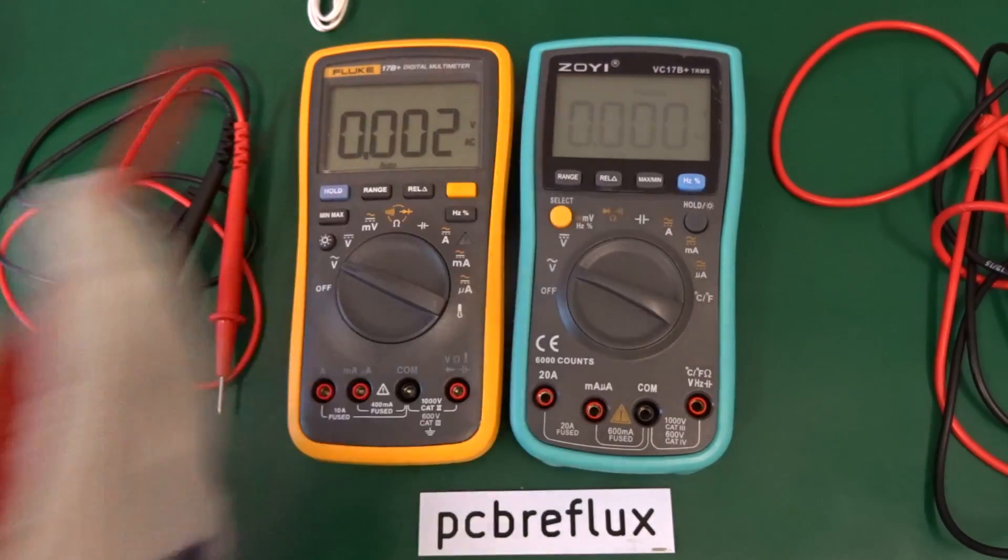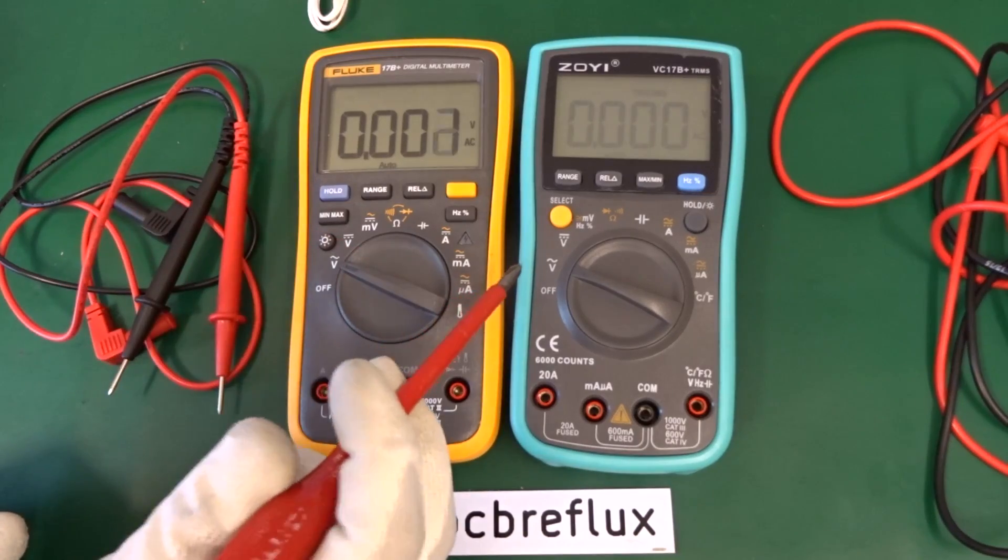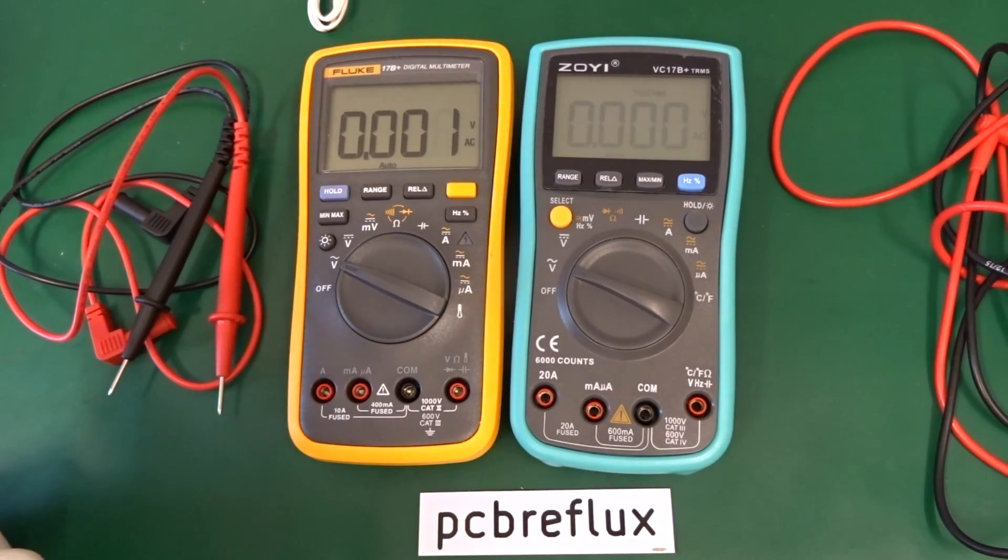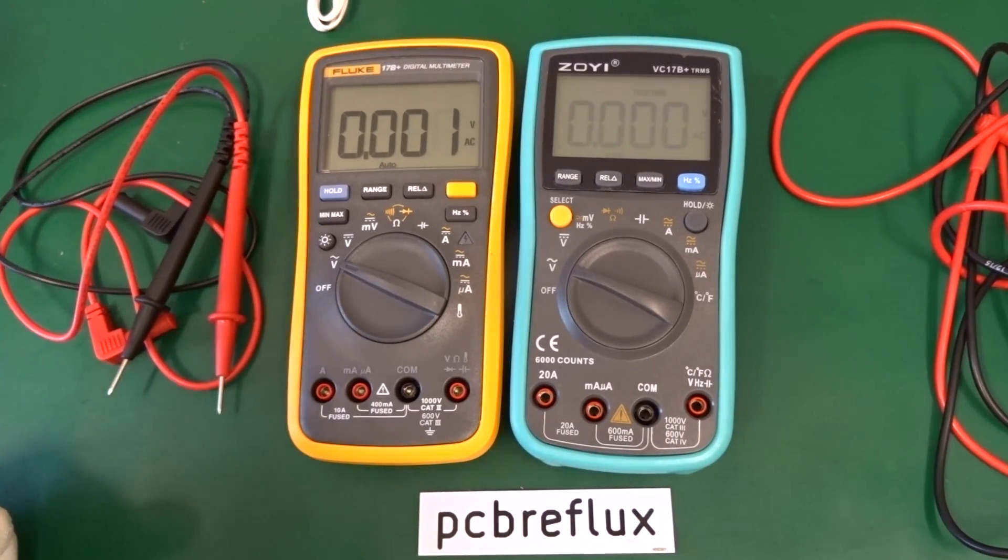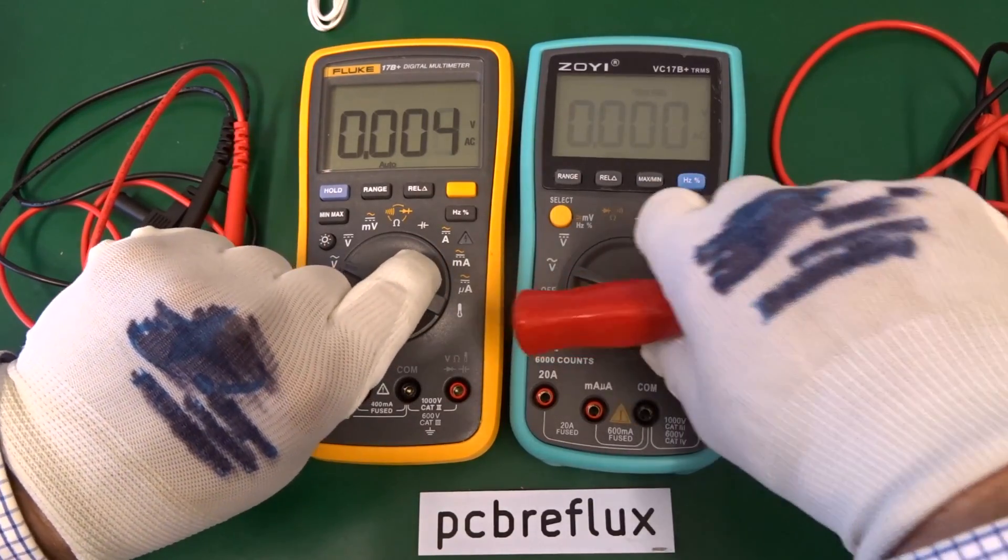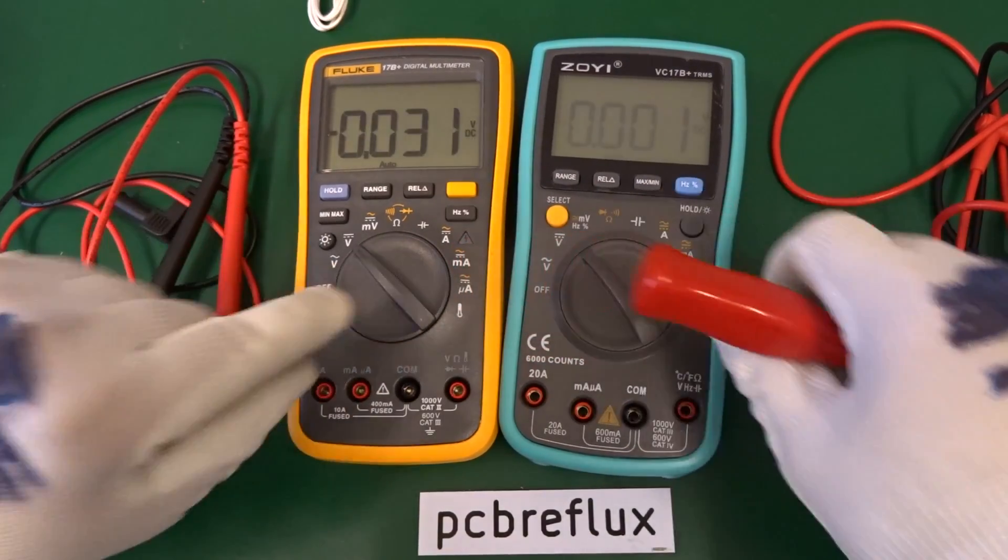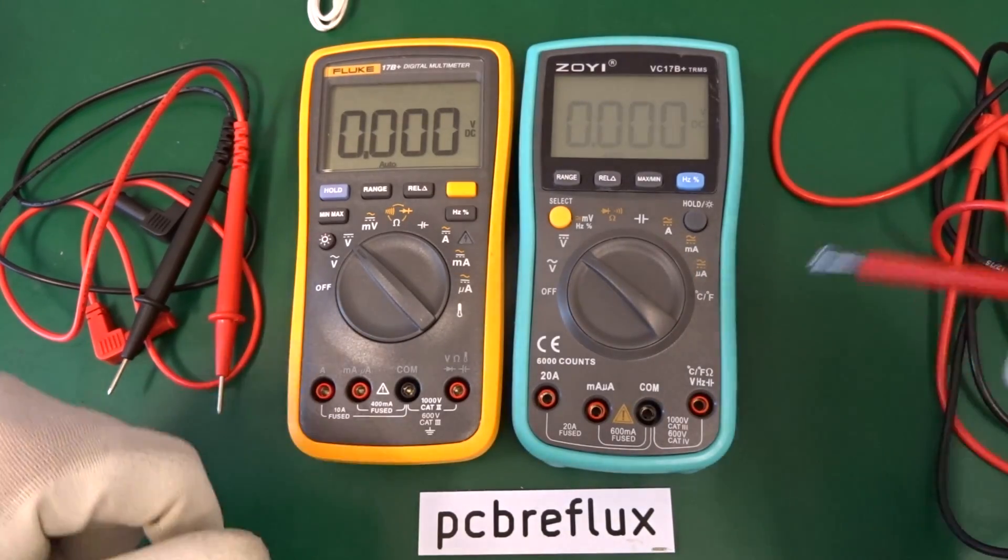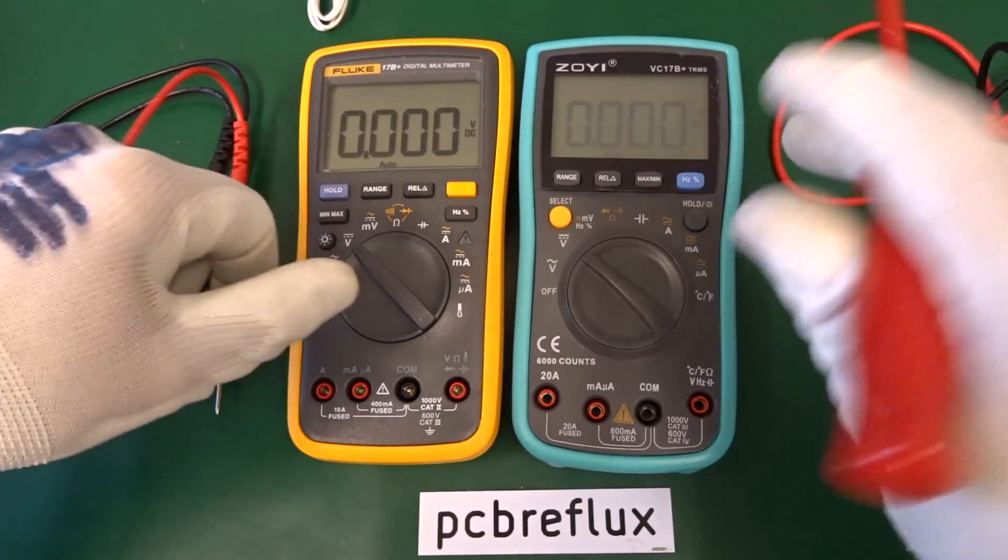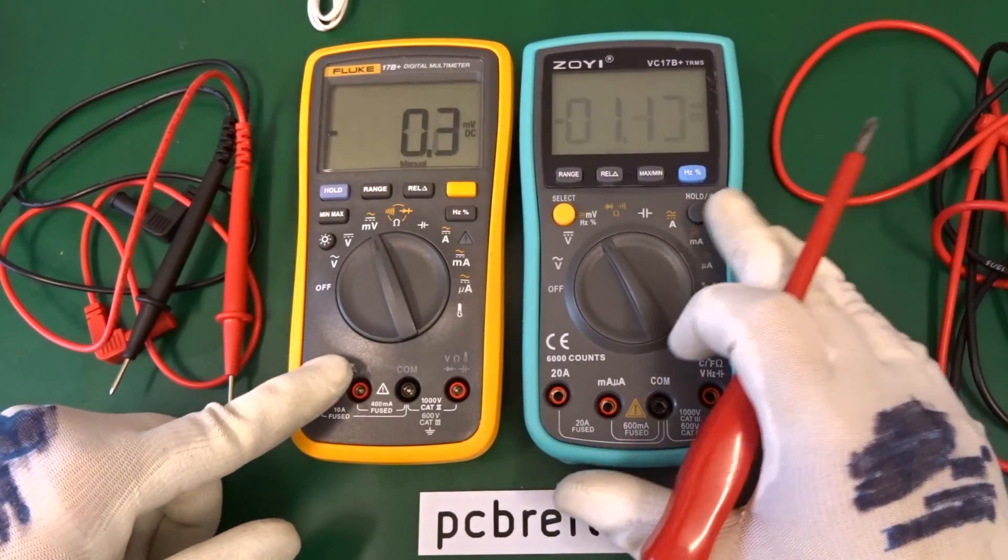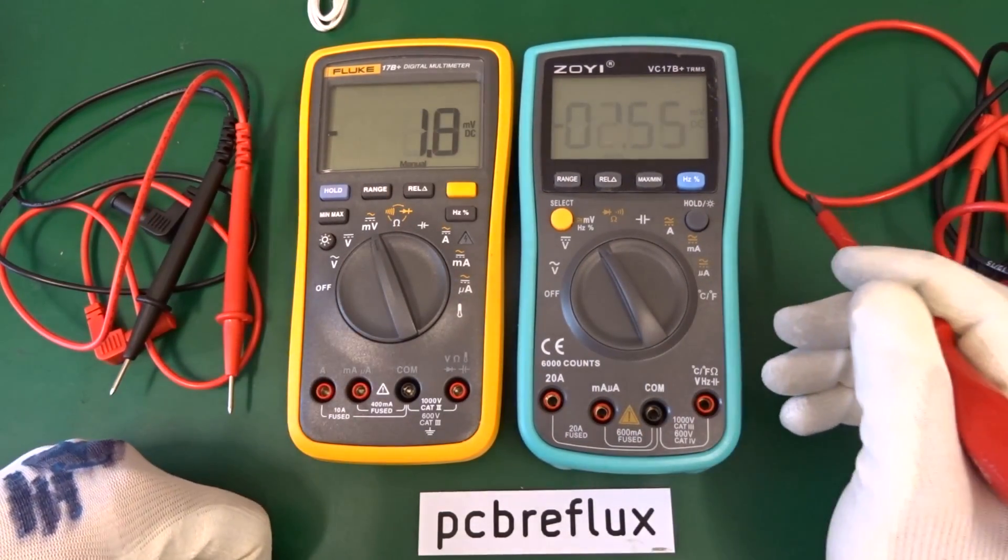The difference is we have this claims to be a true RMS AC voltage range. And on the Fluke, we have no true RMS. Yes, this is the main difference. Now, let's see the DC range. Also, very similar. And also, the display is very similar. So, next we have our millivolt range.